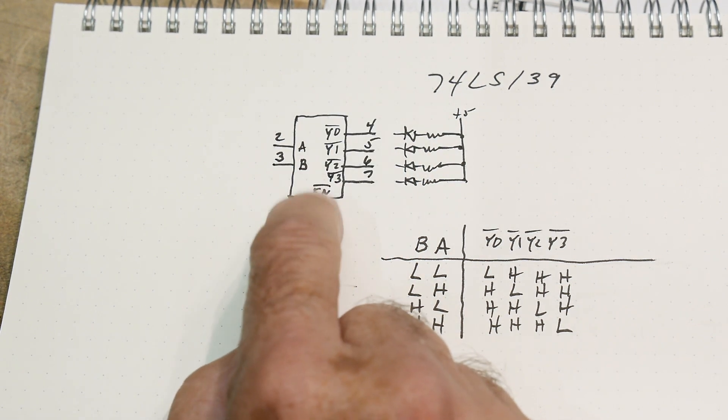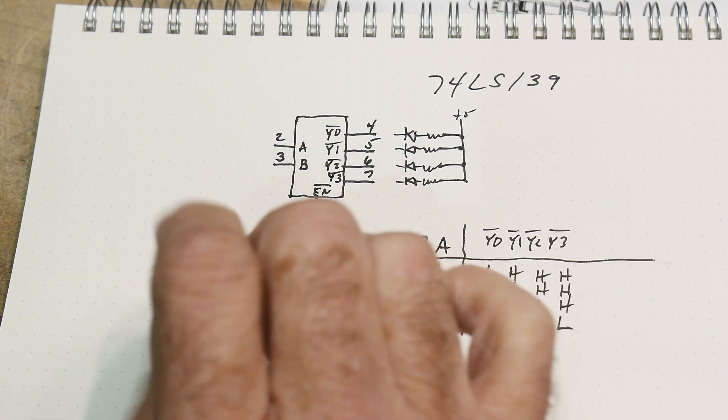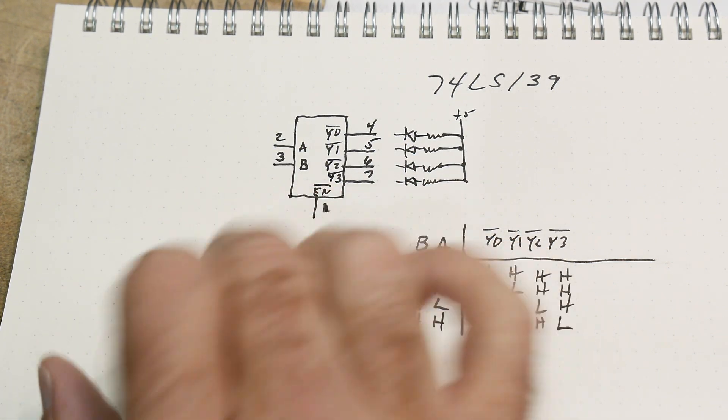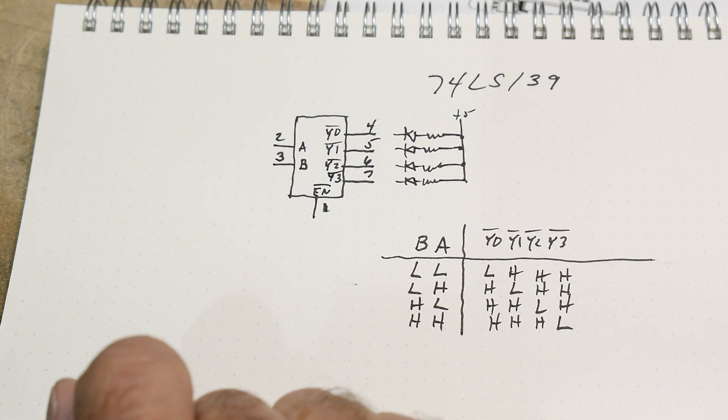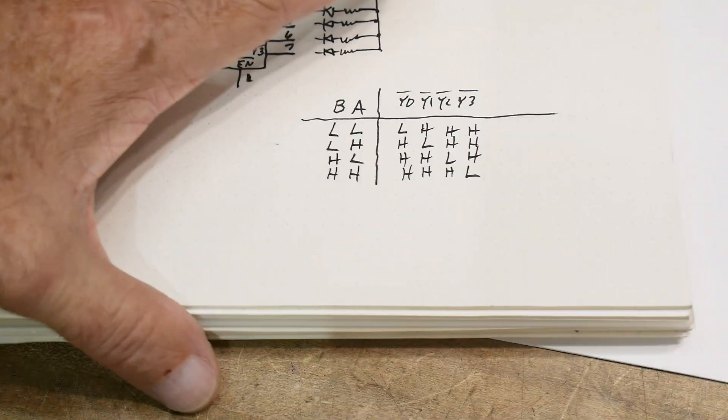There's also an enable pin. So that can be used as a third input to the address decoding, because the enable pin also has to be logic high or logic low. It has to be logic low.